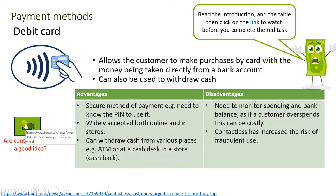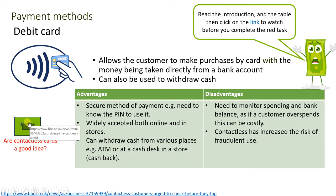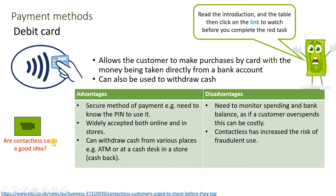Click the video link to watch a BBC clip — search for 'contactless customers urged to check before they tap' on the BBC website. After watching, answer the red question: are contactless cards a good idea? This is extended writing practice — explain what contactless cards are, discuss the good points, then connect to the bad points using high-value connectives like 'on the other hand,' 'however,' and 'although.' Present both sides and a conclusion for a six-point short essay.